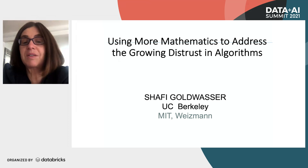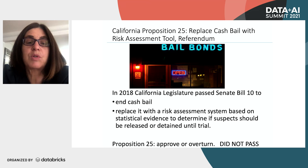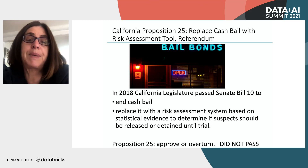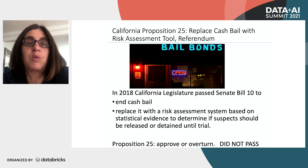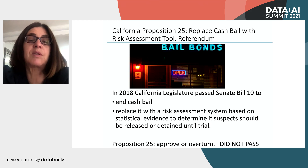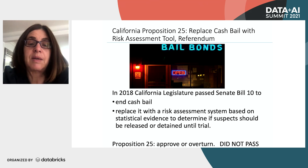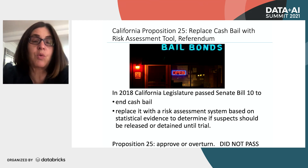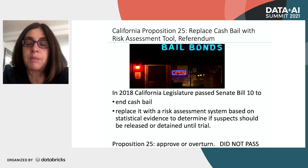I'd like to start by telling you about California Proposition 25, which was on the ballot last year. The proposition was supposed to approve something that passed in the California legislature — a bill which proposed to replace cash bail with a risk assessment tool. The idea had two parts: end cash bail and replace it with no bail without any money involved, and additionally have a risk assessment system to decide whether to let someone out on bail, done through a machine learning program.